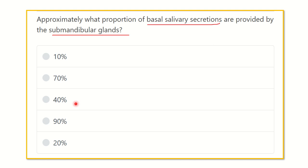We know that there are three major salivary glands: the parotid, submandibular, and sublingual. There are also a lot of minor salivary glands. Among the major glands, the submandibular gland contributes a significant percentage of salivary secretion.